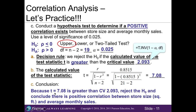Since our test statistic of 7.08 is greater than our critical value of 2.093, we reject the null. We can conclude that there is a positive correlation between store size in square feet and average monthly sales. A helpful tip: after making the decision to reject the null, imagine crossing out the null statement and focusing on the alternative — rho is greater than 0, meaning positive numbers. That's why we conclude there is a positive correlation between our two variables.